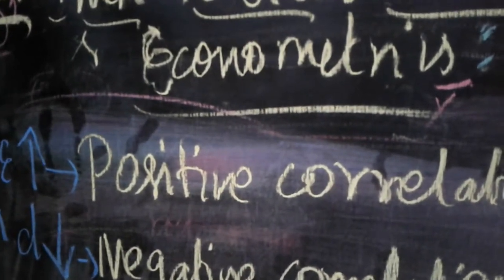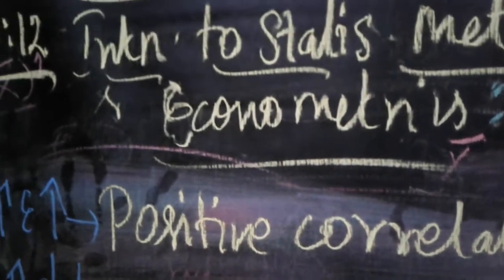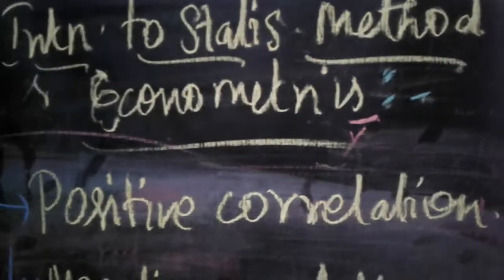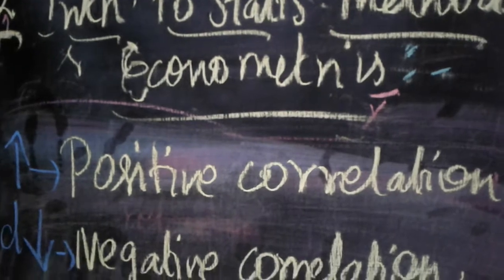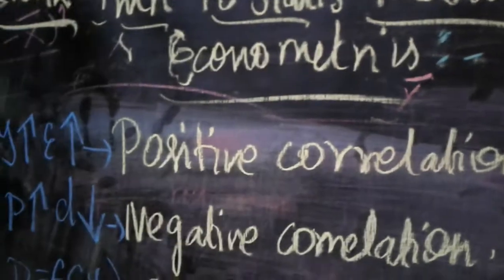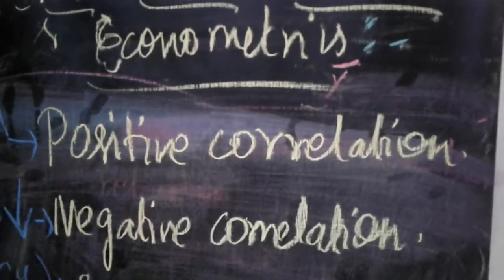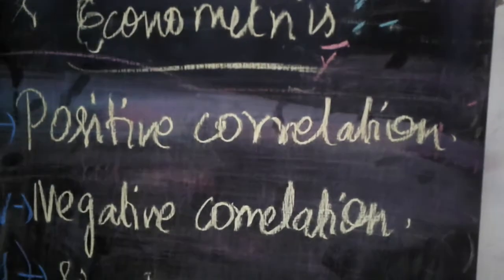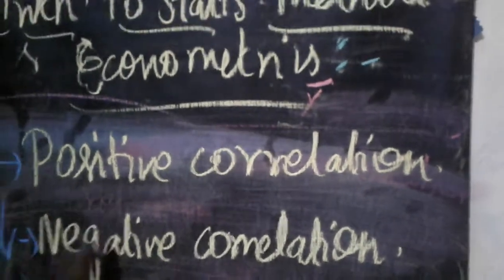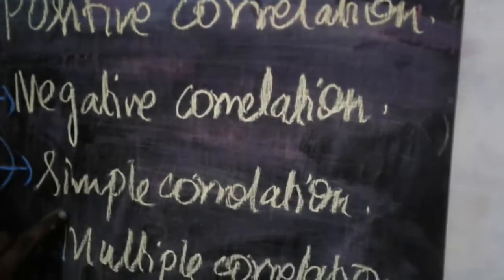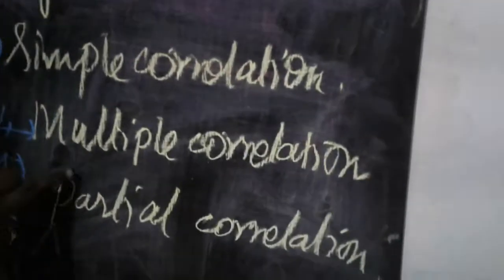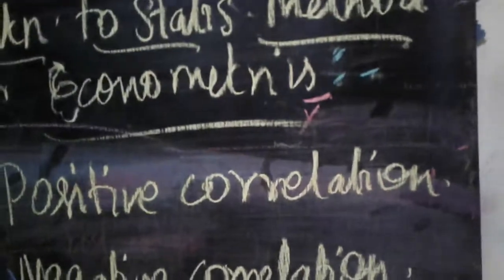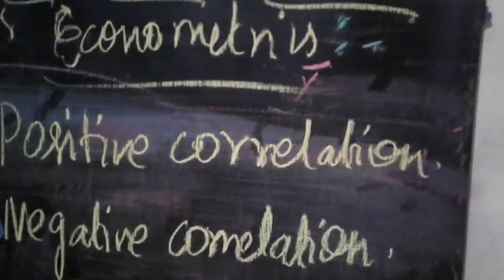The next very important topic we are going to discuss today is the types of correlation. Correlation can be classified under three important types: Type 1, Type 2, and Type 3. The first important things are positive correlation, negative correlation, simple correlation, multiple correlation, and partial correlation. Listen carefully — it will be very easy.